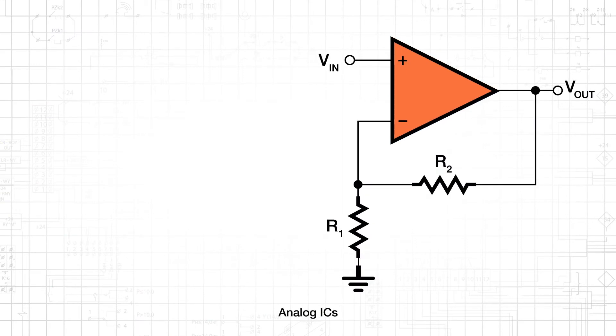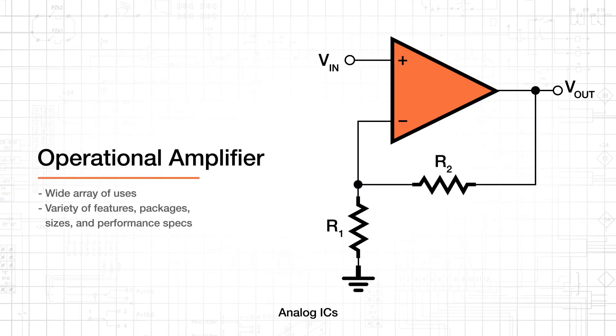Perhaps the most widespread analog IC is the operational amplifier, or op-amp. Op-amps are used for much more than basic signal amplification, and manufacturers have produced a vast selection of devices with different features, package sizes, and performance specifications.